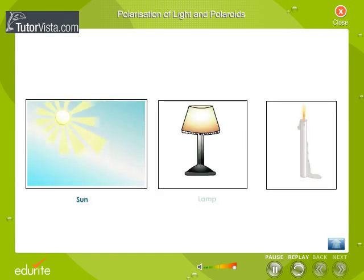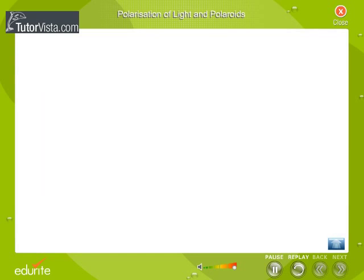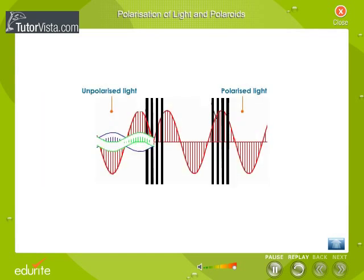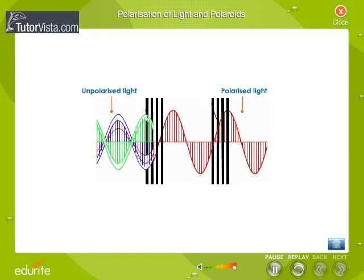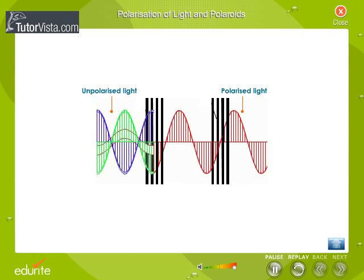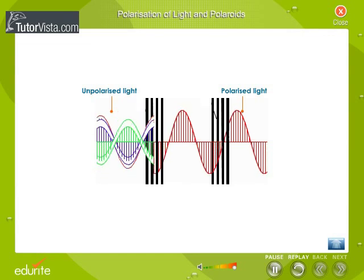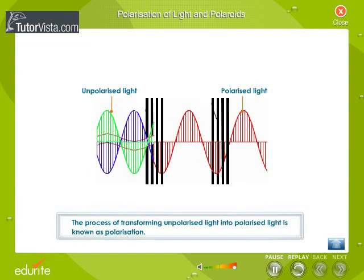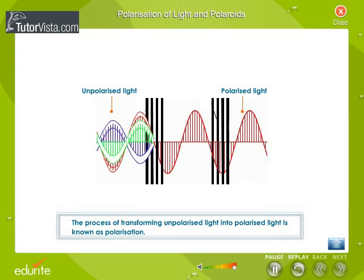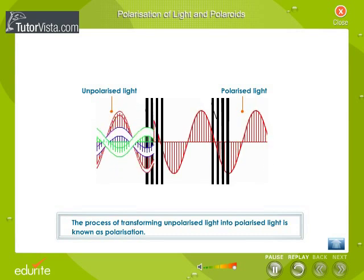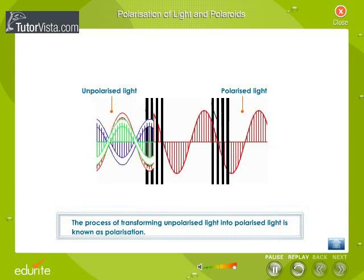Light emitted by the sun, by a lamp, or by a candle flame vibrates in all directions. Such light waves which vibrate in all directions are called unpolarized light. This unpolarized light can be made to vibrate in a single plane by a process called polarization. This process of transforming unpolarized light into polarized light is known as polarization.